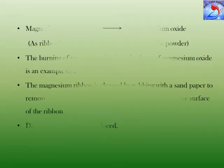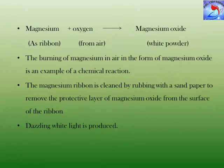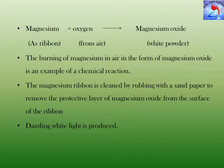Let us study the chemical reaction of magnesium with oxygen. When magnesium ribbon is heated, it burns in air with a dazzling white flame to form a white powder called magnesium oxide. On heating, magnesium combines with oxygen present in air to form magnesium oxide. The equation is: magnesium + oxygen → magnesium oxide.